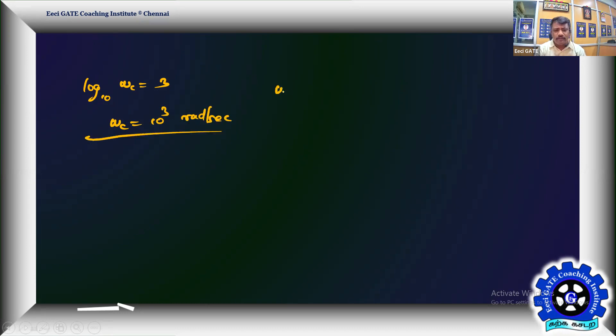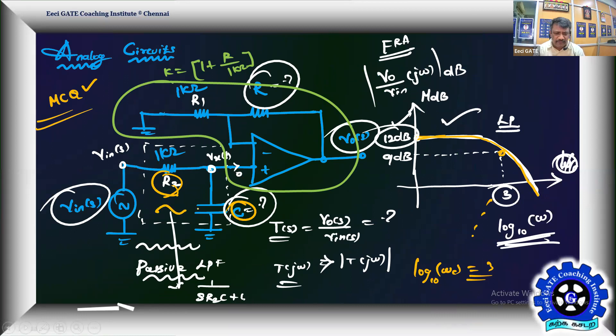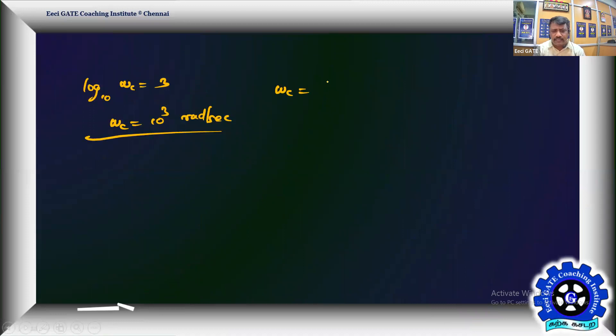You know the cutoff frequency ωc equals 1/(R2C). If we compare, ωc equals 1/(R2C) will be the cutoff frequency decided by this frequency-selective passive low pass RC network. ωc equals 1/(R2C) equals 10³, therefore R2C equals 1/ωc equals 10⁻³ seconds. R2 is given 1 kilo-ohm, so C equals 10⁻³ divided by R2, equals 10⁻⁶ farads.